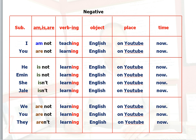I am not teaching English on YouTube now. You are not learning English on YouTube now. He is not learning English on YouTube now. You can also use the short form: 'isn't'. She isn't learning English on YouTube now. Jale isn't learning English on YouTube now. We are not learning English on YouTube now. You are not learning English on YouTube now. They are not — or 'aren't', the short form of 'are not' — they aren't learning English on YouTube now.